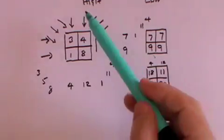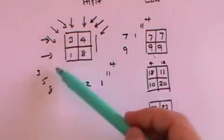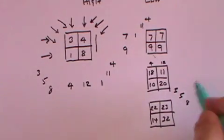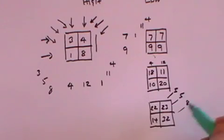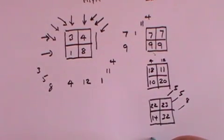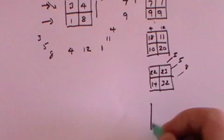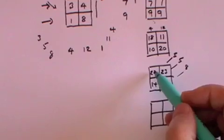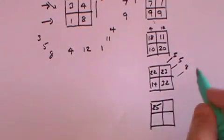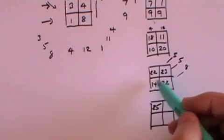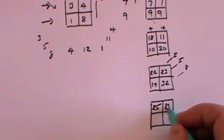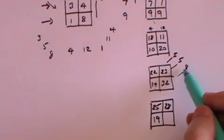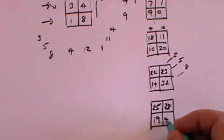And then finally we take the effect of the X-rays in this direction which gave us a 3, a 5, and an 8 coming in this direction. And so what we do is we create now the final grid. We add 3 to 22, that becomes 25. We add 5 to each of these two. So 5 plus 23 is 28. 5 plus 14 is 19. 8 plus 32 is 40.